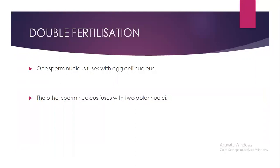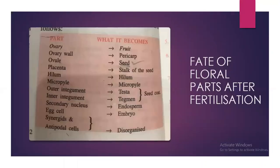Double fertilization is when one sperm nucleus fuses with the egg cell nucleus and the other sperm nucleus fuses with the two polar nuclei. After fertilization: the ovary changes into fruit; the ovary wall into pericarp; the ovule into seed; the funicle into stalk of the seed; hilum remains hilum; micropyle remains micropyle; outer and inner integuments change into testa and tegmen, which are parts of the seed coat; the secondary nucleus changes into endosperm; the egg cell and synergids change into embryo; and antipodal cells disintegrate.